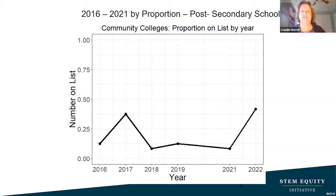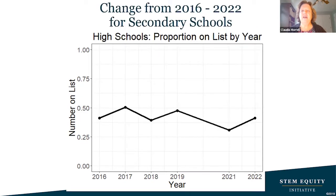Then something happened — COVID-19. It affected everything and we saw a huge increase. For secondary schools, the indicator reflects students who are underrepresented in non-traditional programs, but this is a much bigger issue. This data point doesn't mean underrepresented students suddenly ran for the hills.